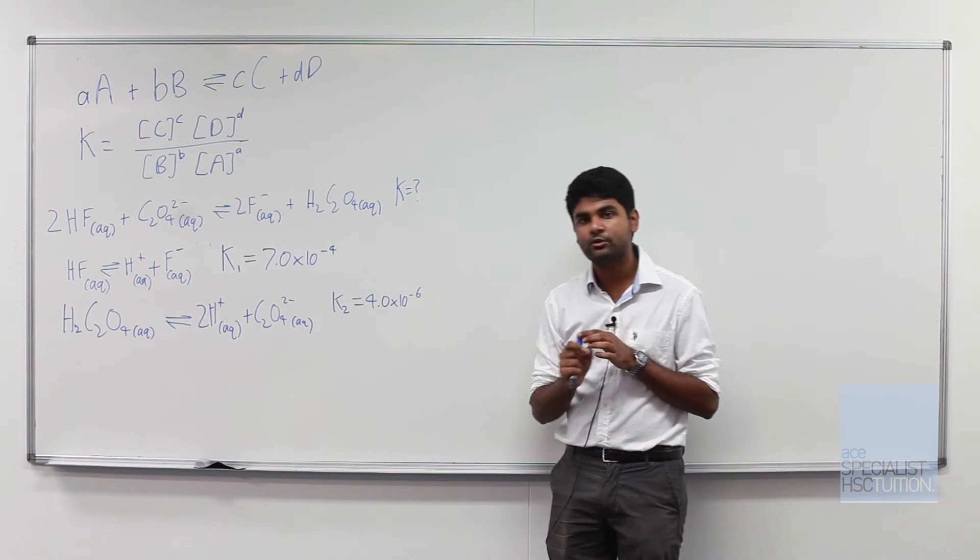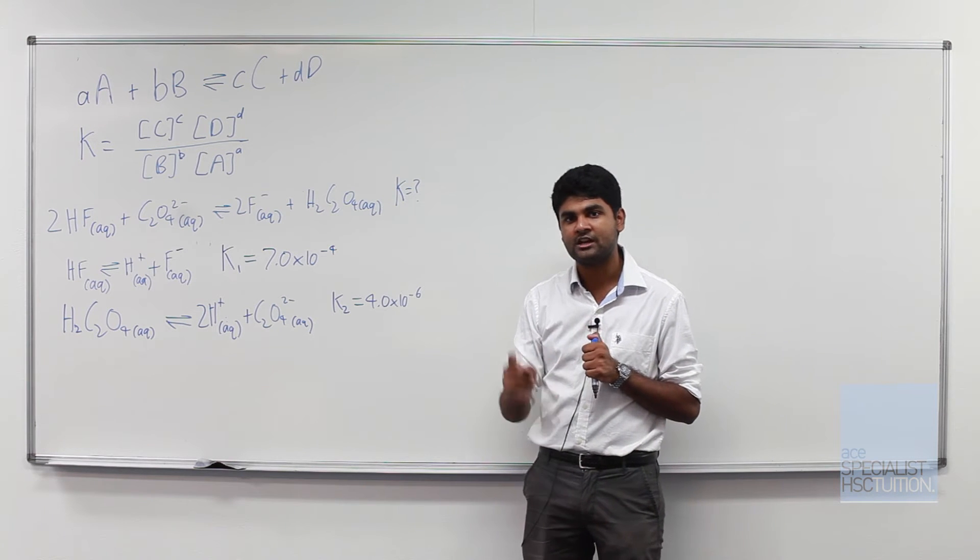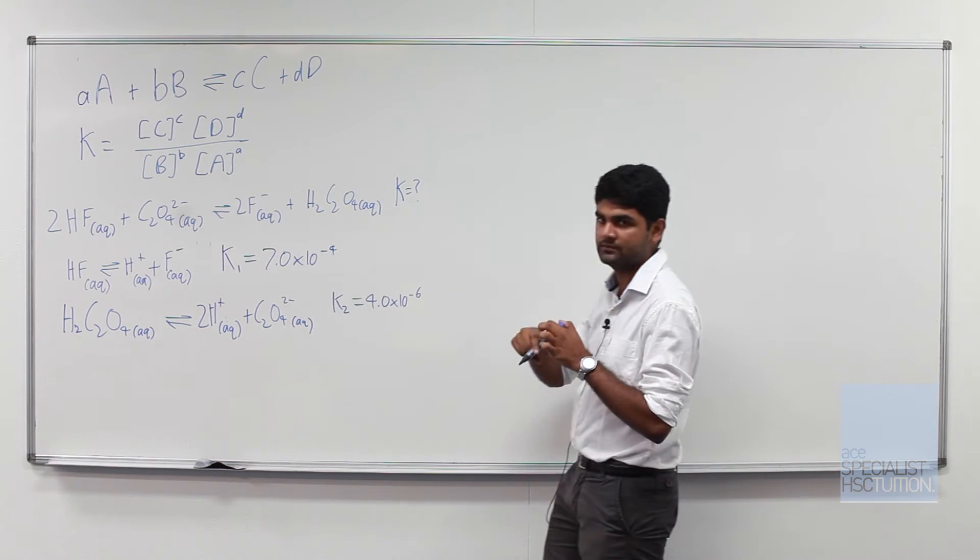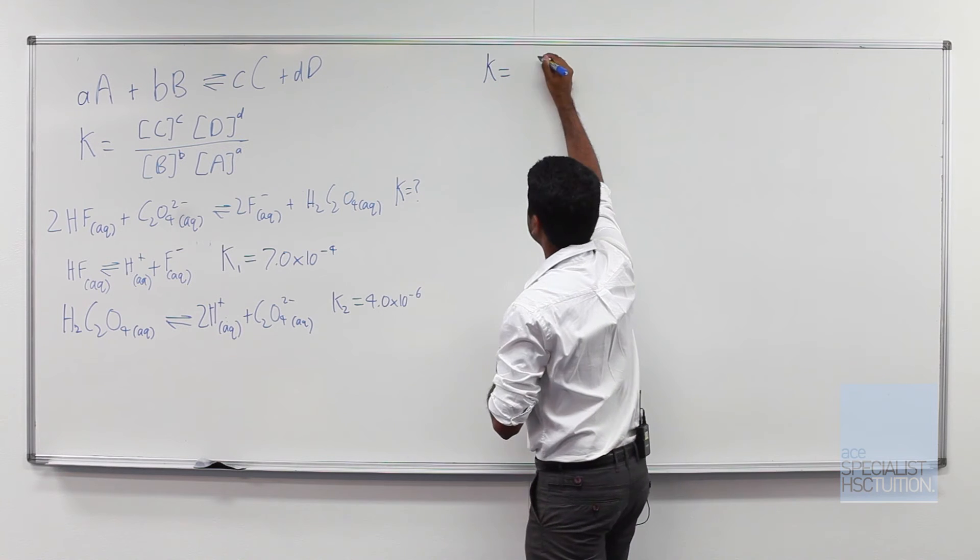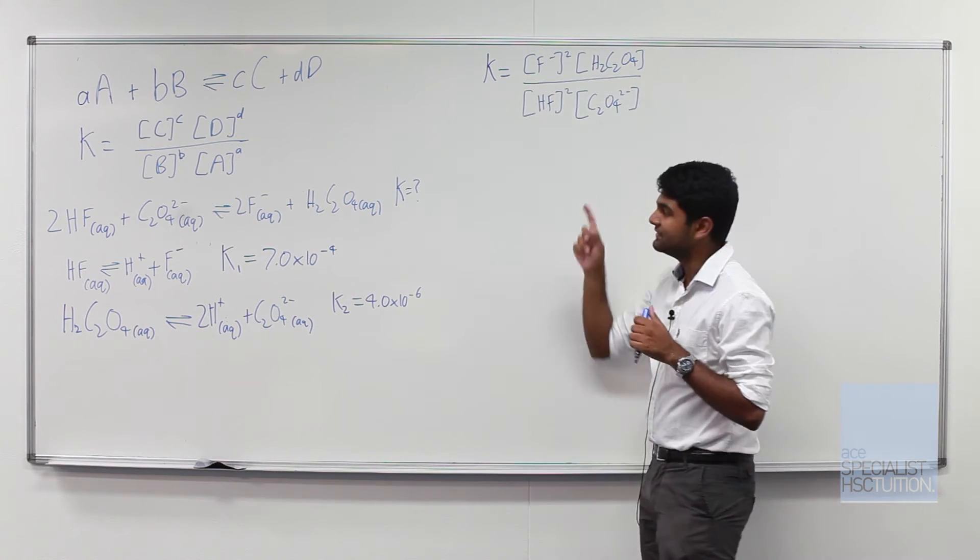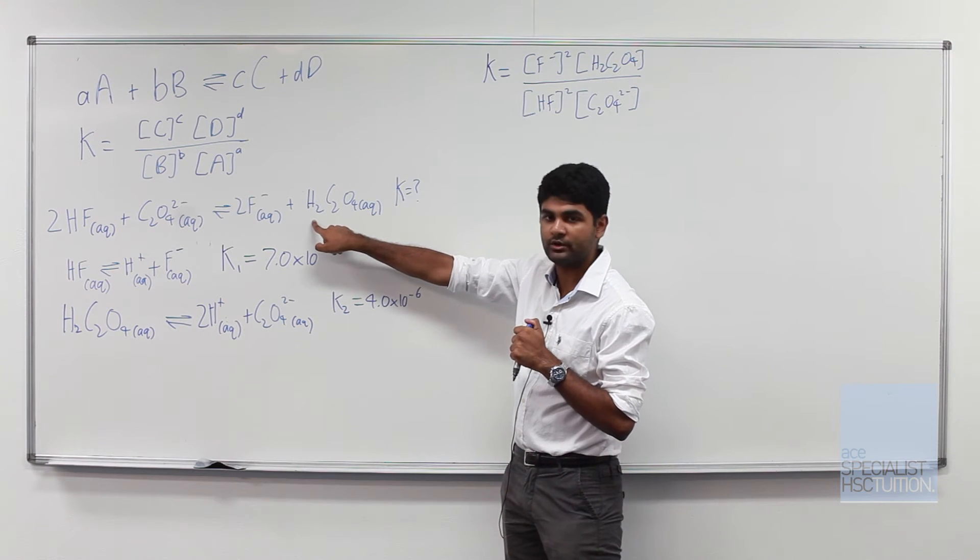Now what we need to do in any question about equilibrium constant is first step write out an equilibrium expression for this equation. So this K is the K for this equilibrium equation.